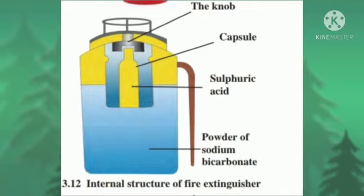Now let us see regular fire extinguishers. A fire extinguisher contains sodium bicarbonate powder. There is also dilute sulfuric acid placed in a glass capsule. The capsule breaks on pressing the knob, and the sulfuric acid comes in contact with the sodium bicarbonate. The two react chemically to release carbon dioxide gas. Carbon dioxide gas-based fire extinguishers do not cause corrosion and are non-conductors of electricity. Therefore, these are used when electrical and electronic equipment catches fire.